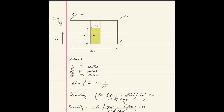First, we draw a diagram showing the vessel: length 120 meters, breadth 26 meters, draft 6 meters. The bilged compartment has a length of 17 meters and a height of 6.8 meters. This entire compartment is filled with cargo, marked in yellow to indicate cargo inside.